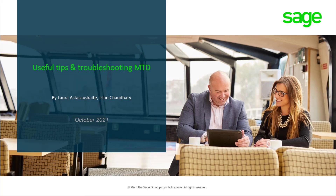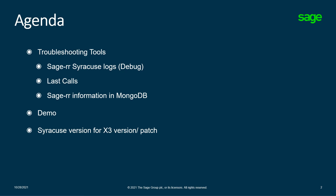Welcome to our presentation on useful tips and tricks for MTD. We will be covering troubleshooting tools used to investigate MTD issues. Looking ahead to the agenda, the troubleshooting tools we will be covering include the Sage RR Syracuse Debug Logs, as well as the Last Calls, and how this information is stored in MongoDB. There will also be a short demo on what to look out for on the Last Calls when making a successful submission, before we go over the relevant Syracuse version and patch requirements for the equivalent version of X3.